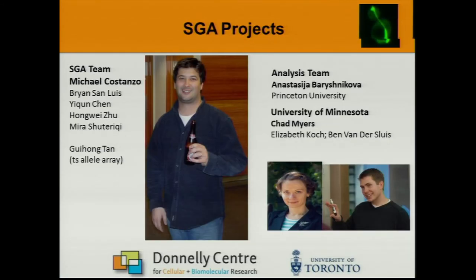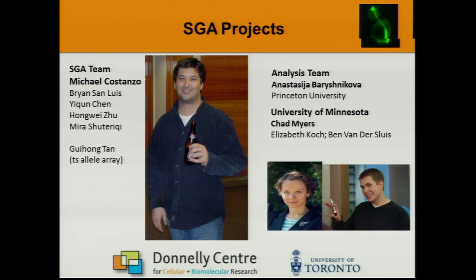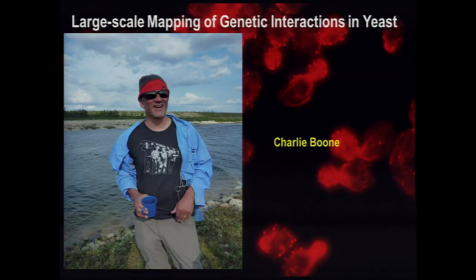The SGA projects in the lab are led by Michael Costanzo, a senior research associate in our group. Anastasia Brizhnikova, now at Princeton University, still works with us in analysis of our data, and Chad Myers is the lead computational person on these projects. All this is done in collaboration with Charlie Boone.